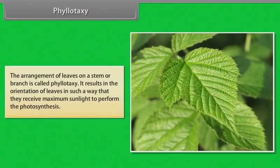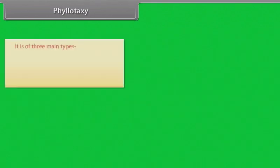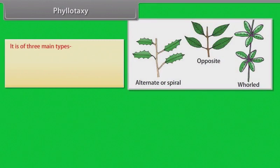Phyllotaxy. The arrangement of leaves on a stem or branch is called phyllotaxy. It results in the orientation of leaves in such a way that they receive maximum sunlight to perform the photosynthesis. It is of three main types: alternate or spiral, opposite, and whorled.